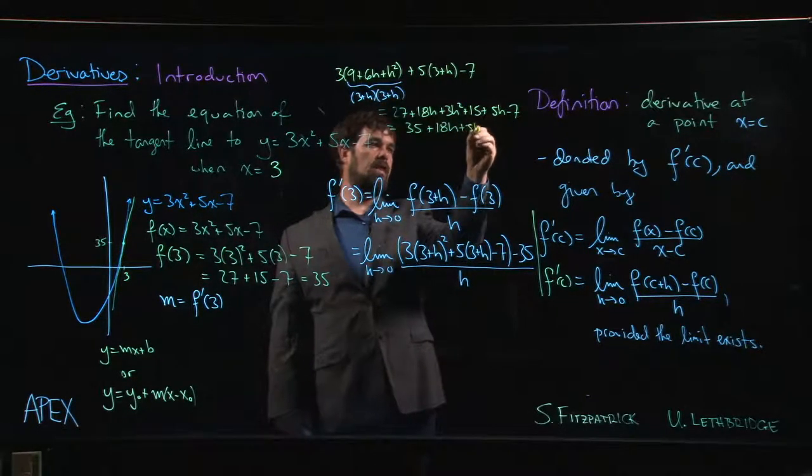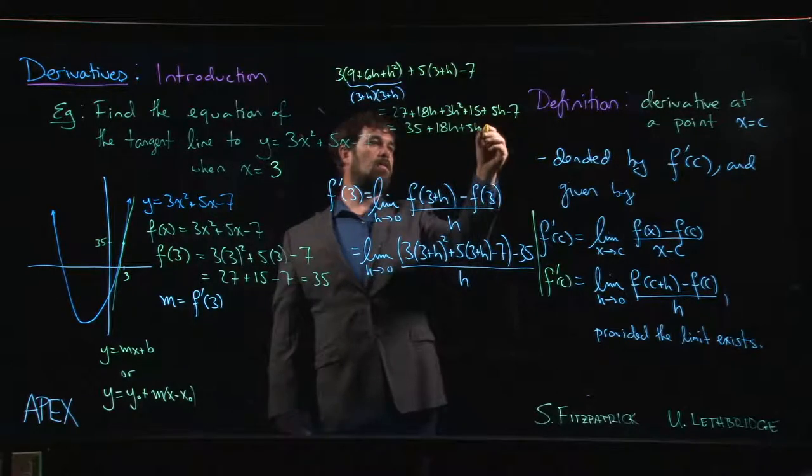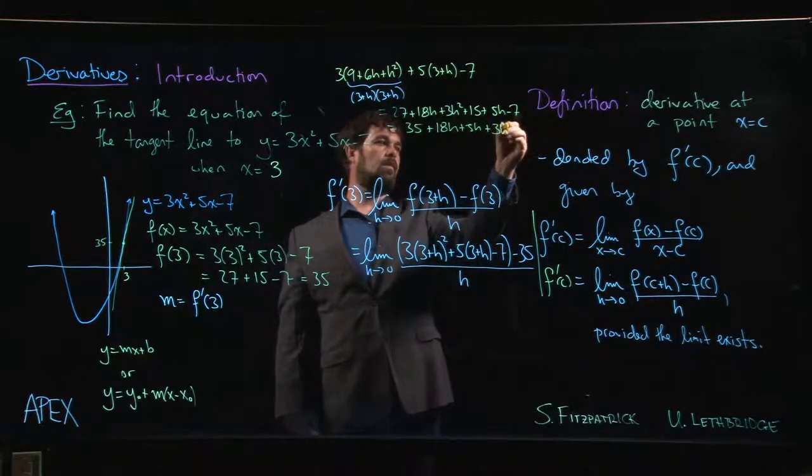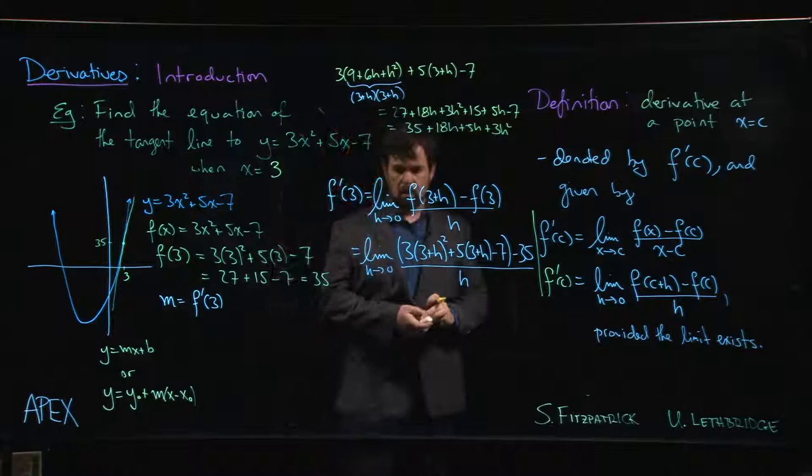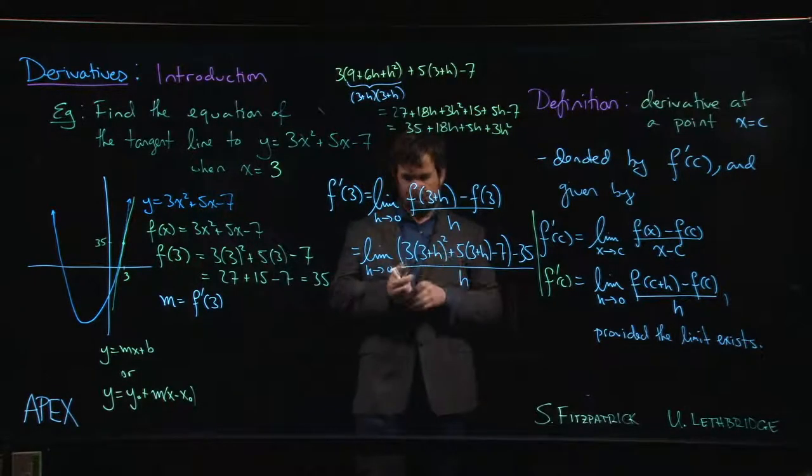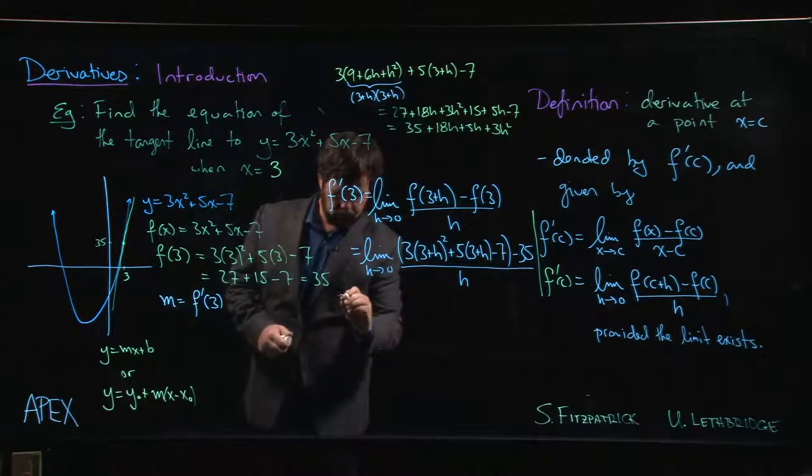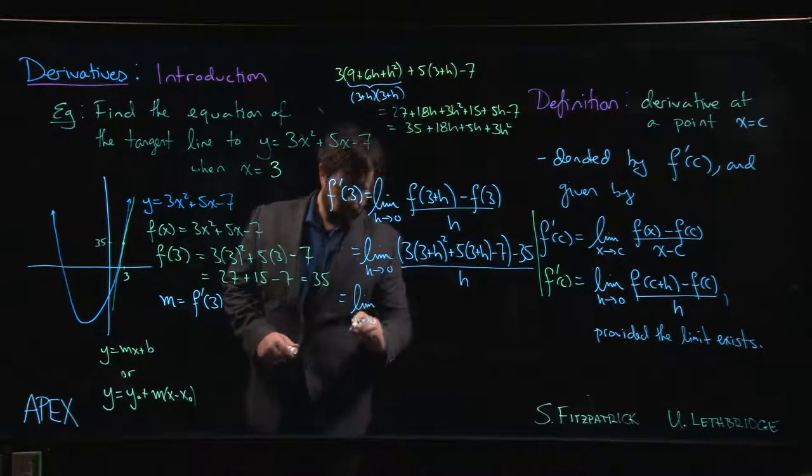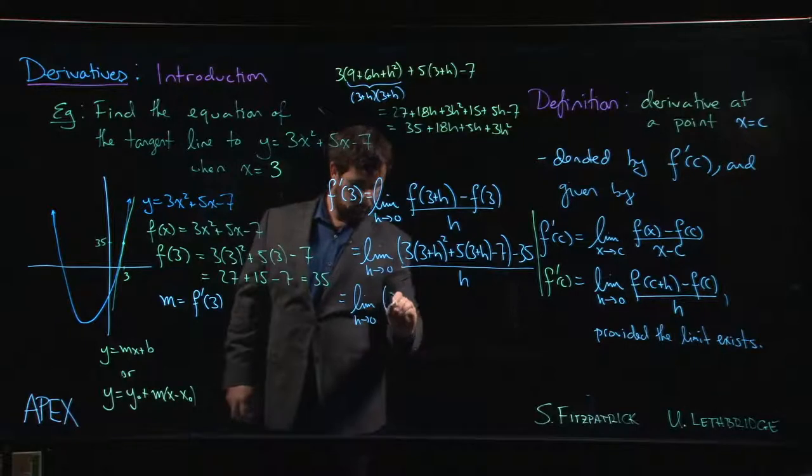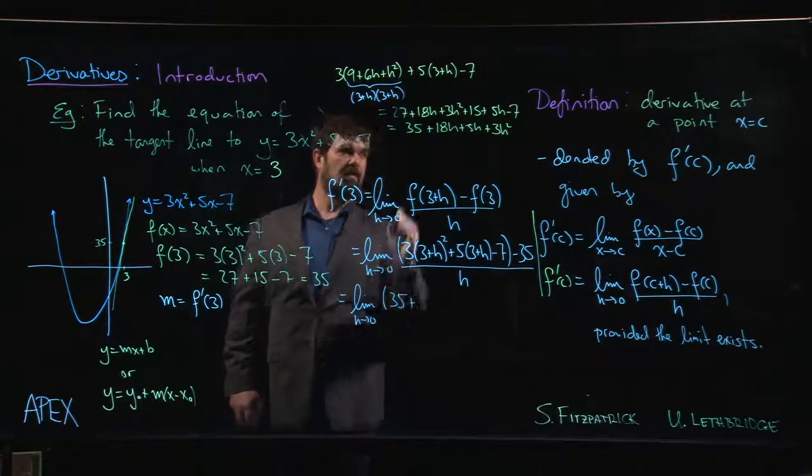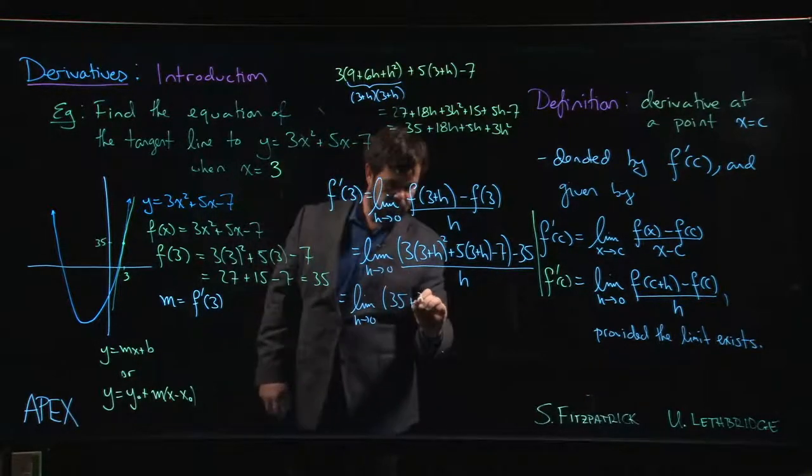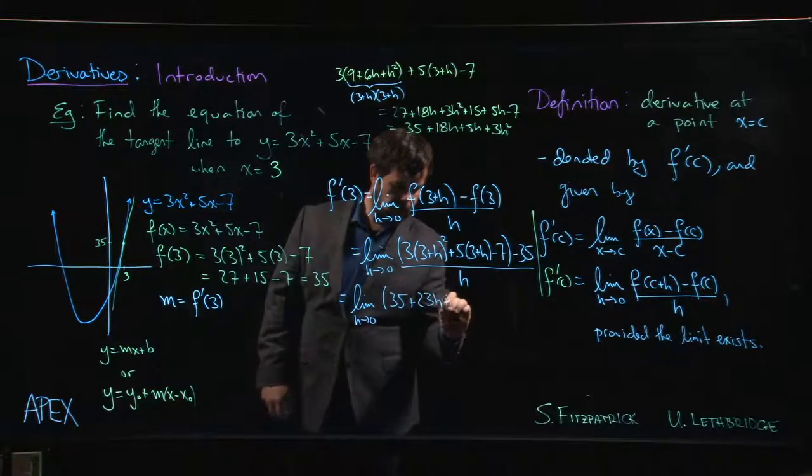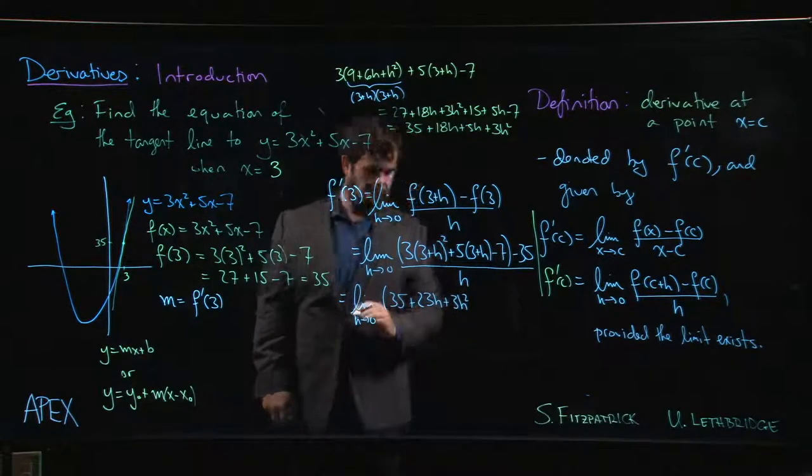3 plus h, we'll simplify down here, plus 3h squared. Okay, so we'll put all that in. So we have 35 plus 18 plus 5 is 23h, plus 3h squared.